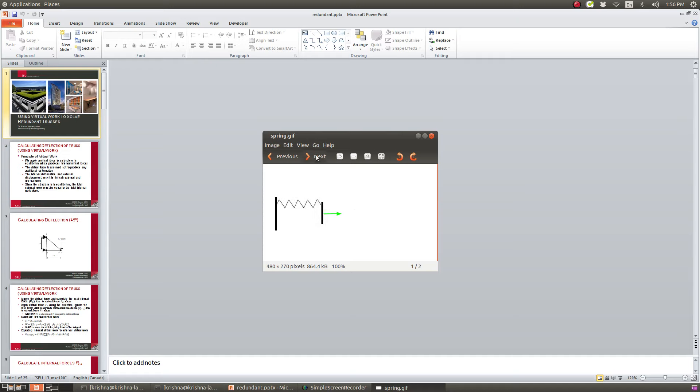We'll do the same thing here. I'll just illustrate the principle for the truss structure. Essentially, remove the redundant link, apply the external force and then we'll apply these two forces over here that changes this distance.